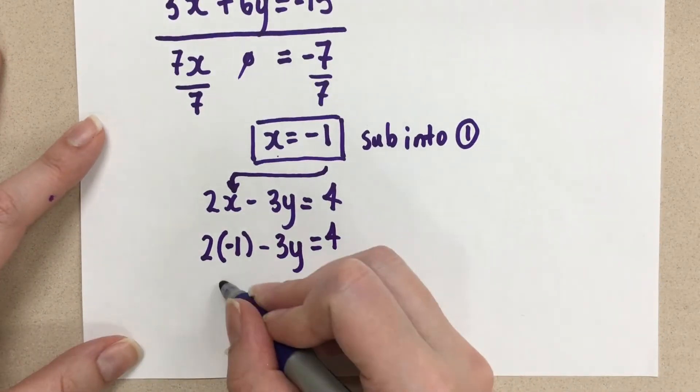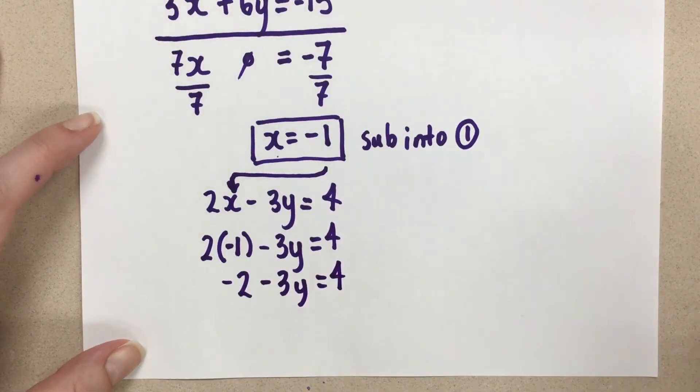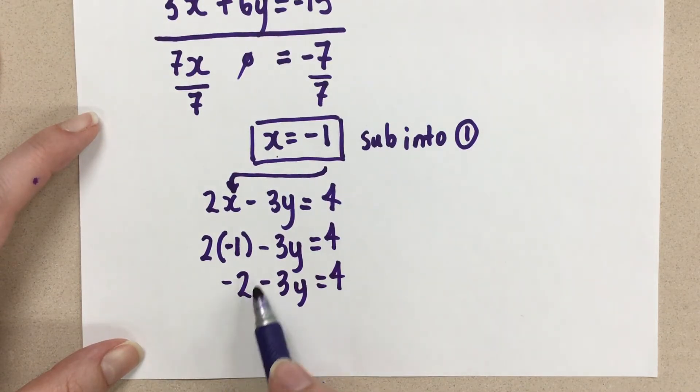And that gives us negative 2 minus 3y equals 4. So we want to solve now for the y variable. There's only the y left. We're going to solve for the y.